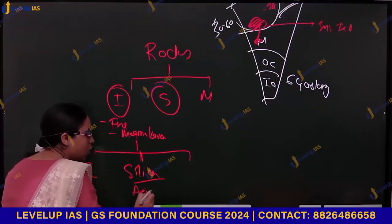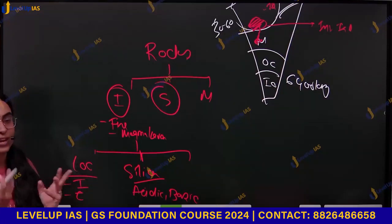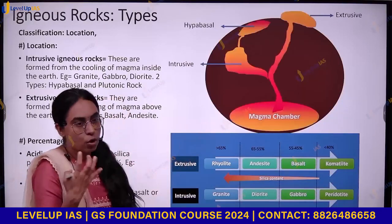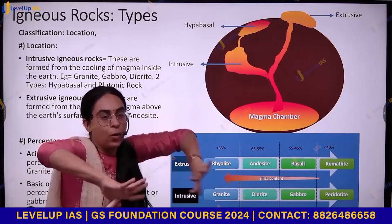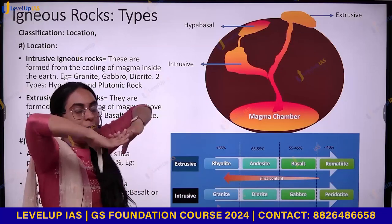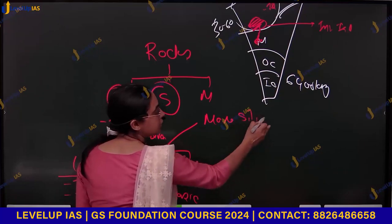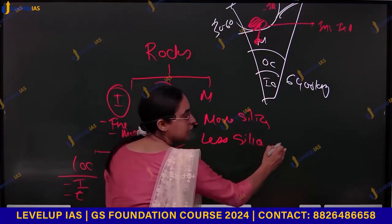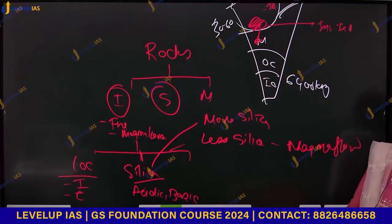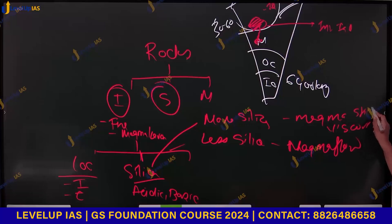Whether it is an acidic rock or a basic rock depends on silica content. If you have more silica, the rock will be acidic. If the magma has more silica, it is not very fluid — it is more viscous and sticky in nature. If it has less silica, the magma becomes very flowing.